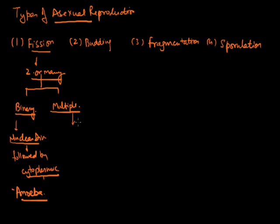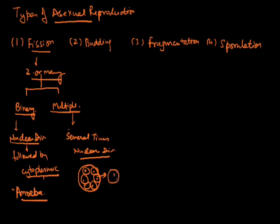When we say multiple fission, it means more than two, so you will get more than two organisms. The nucleus divides several times. This is the difference between binary and multiple fission. Daughter nuclei are arranged in the periphery, surrounded by some amount of cytoplasm, and they form new organisms. A single cell will produce many organisms by multiple fission. The best example is Plasmodium, which is the causative pathogen for malaria fever.